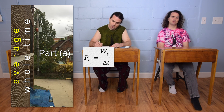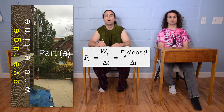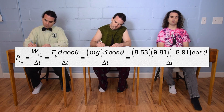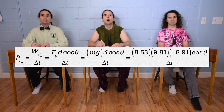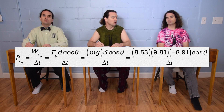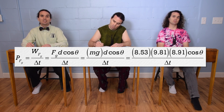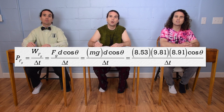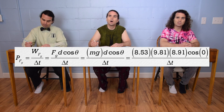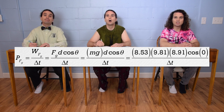Let's start with the equation power equals work over change in time, and that's the work done by the force of gravity, so we can substitute in for the work done by the force of gravity: force of gravity times displacement times cosine theta, and then substitute mass times acceleration due to gravity for the force of gravity. The mass is 8.53 kilograms, acceleration due to gravity is 9.81 meters per second squared, and the displacement in the y direction is negative 8.91 meters. In the work equation we use the magnitude of the force and the magnitude of the displacement, so it's positive 8.91 meters times the cosine of zero degrees, all divided by change in time — which we need to figure out.